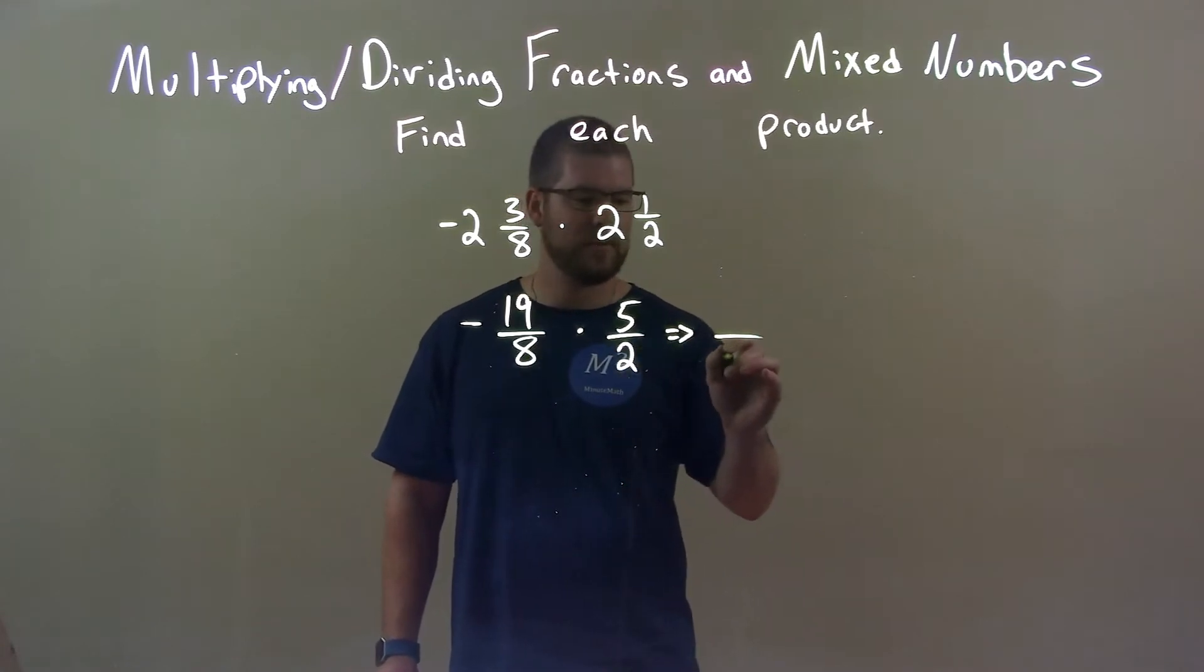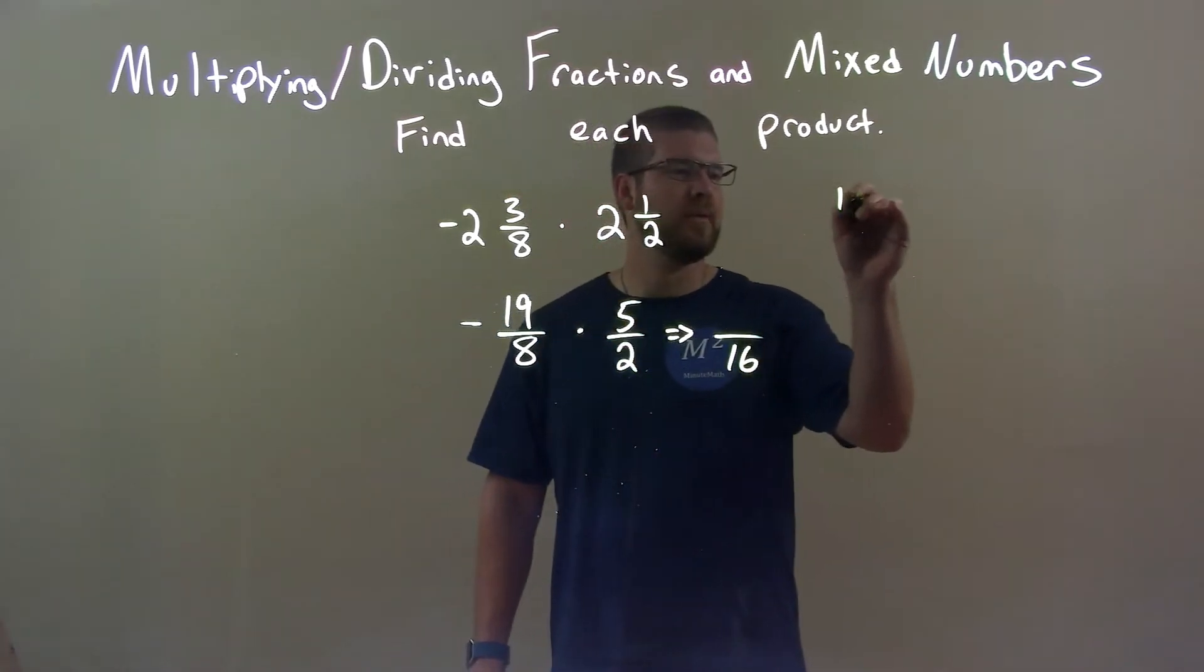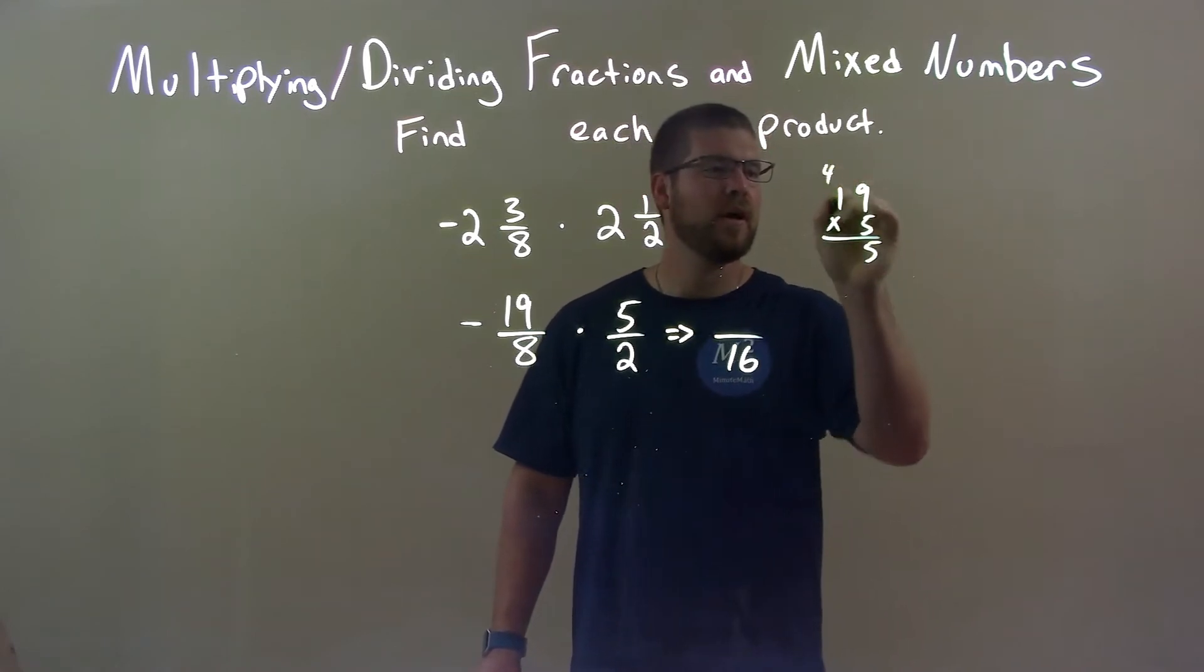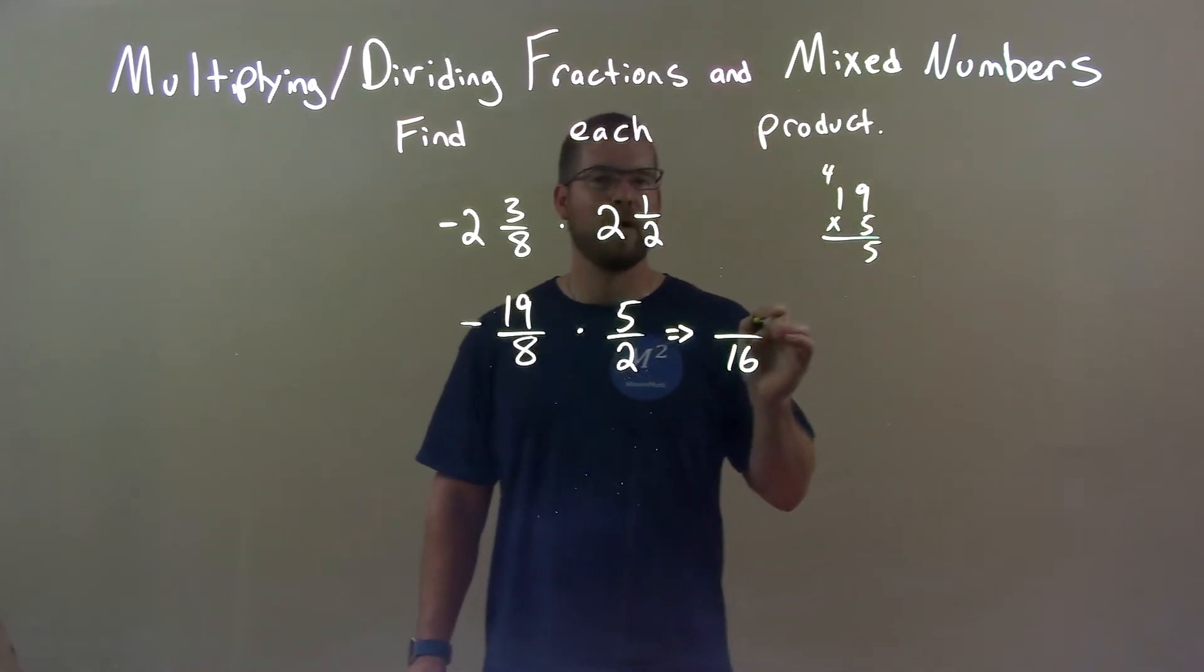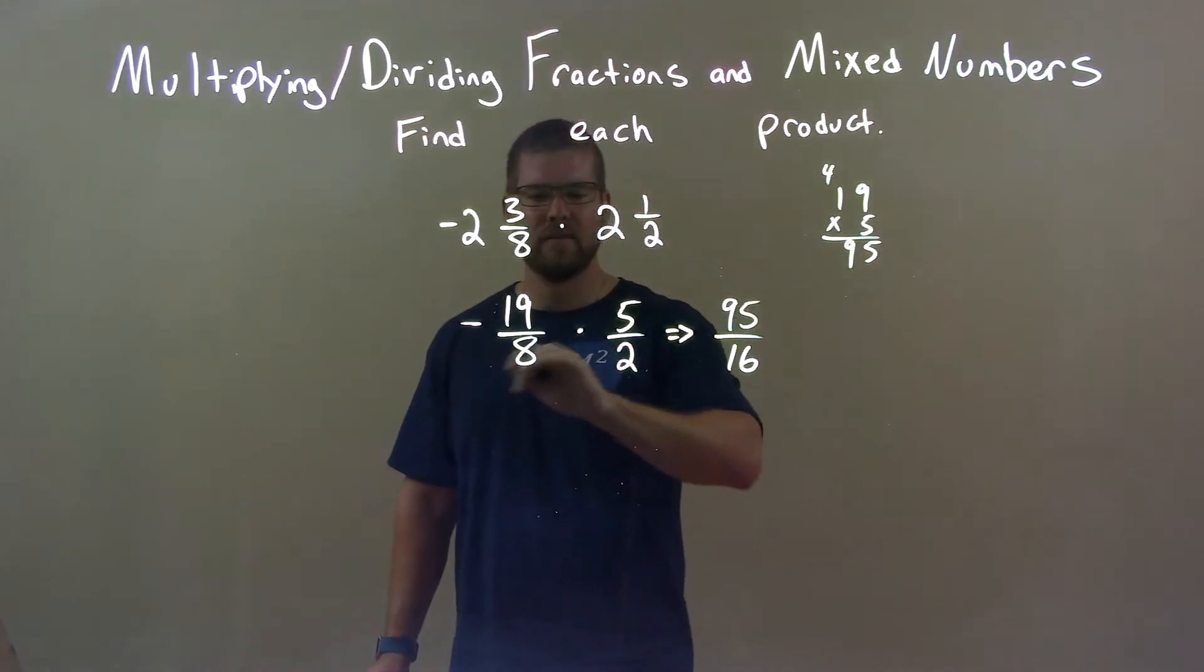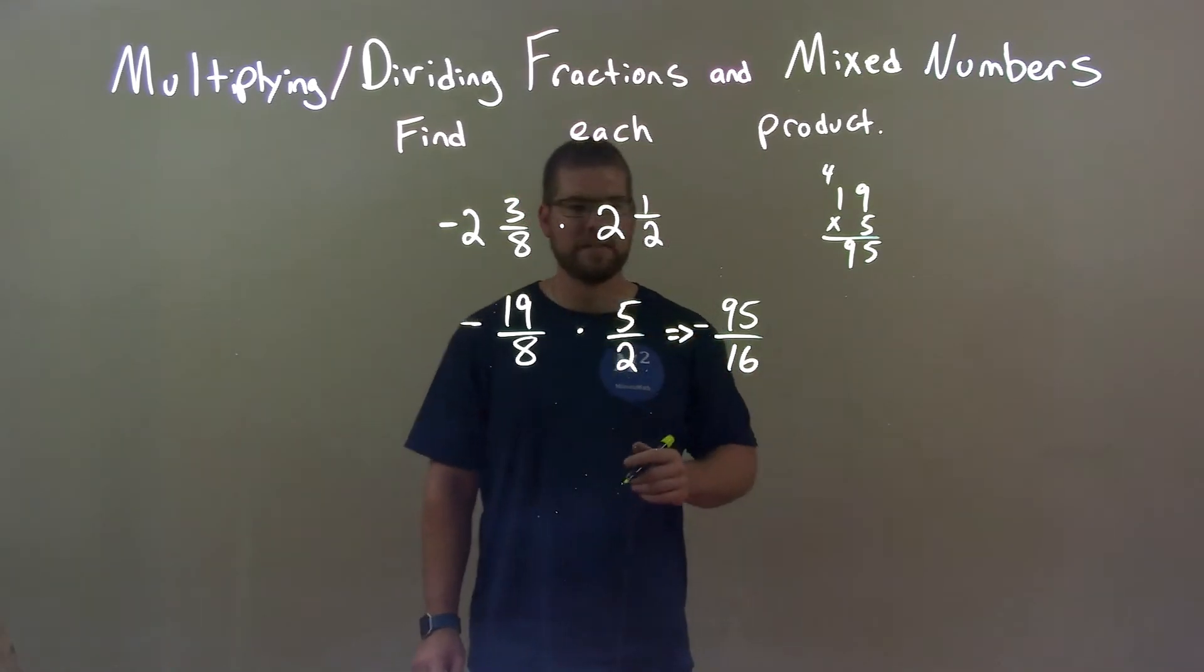Denominator is easy. 8 times 2 is 16. Numerator, a little more complicated. 19 times 5. If you need help here, 19 times 5. 5 times 9 is 45, carry the 4. 5 times 1 is 5, plus 4 is 9. So we have 95. And a negative times a positive is a negative. So we have negative 95 over 16.